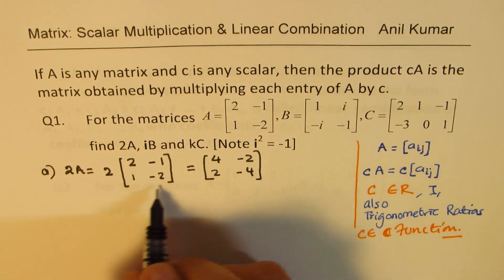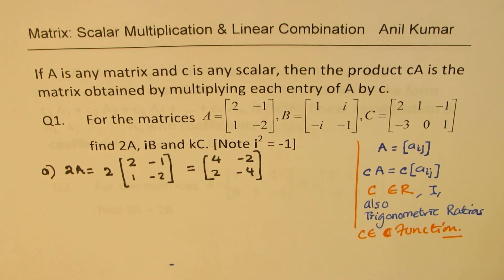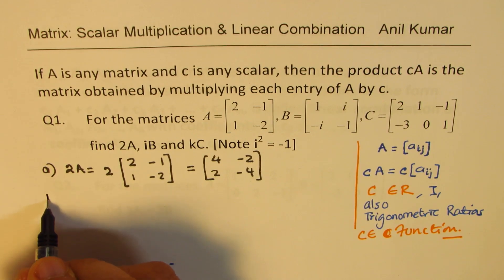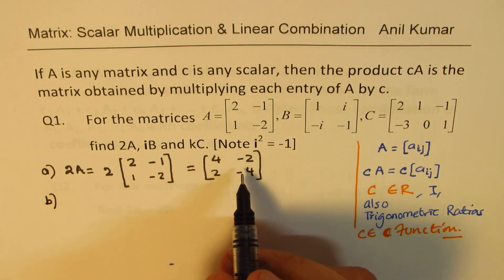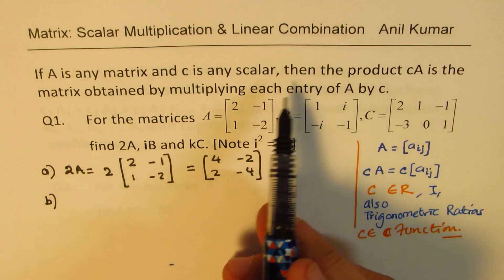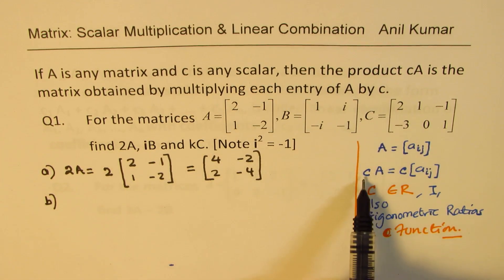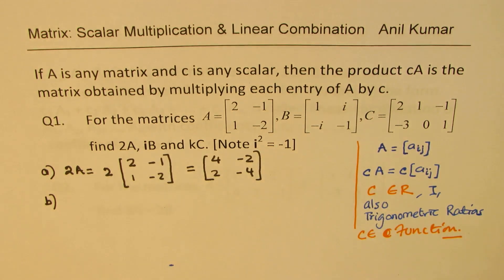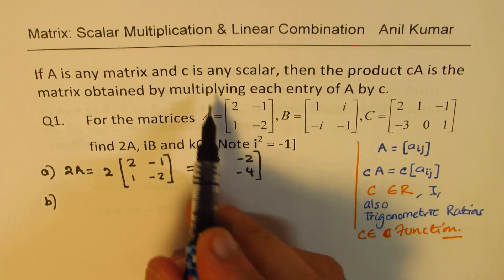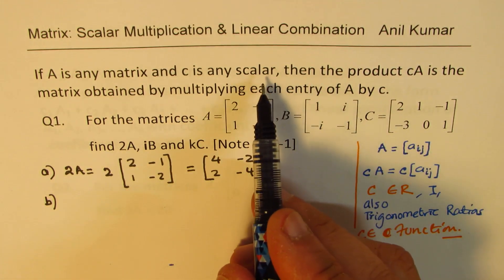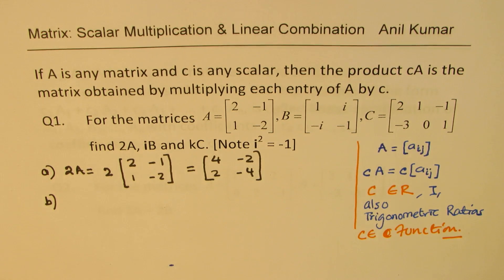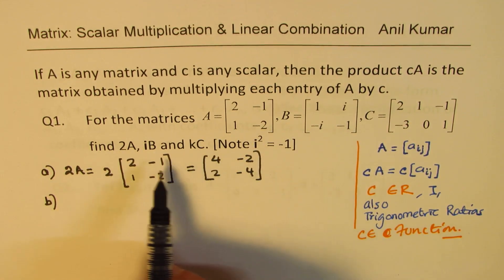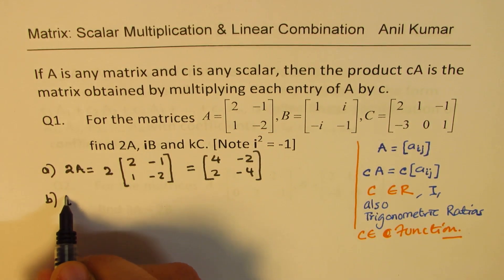So you see dimensions of this matrix are still two by two, nothing changes. The elements they are scaled up and therefore we are saying scalar. Scalar doesn't mean that this number is a number, scalar means it's like transformation, you can see, dilation, enlargement. So it is more on the transformation terms.